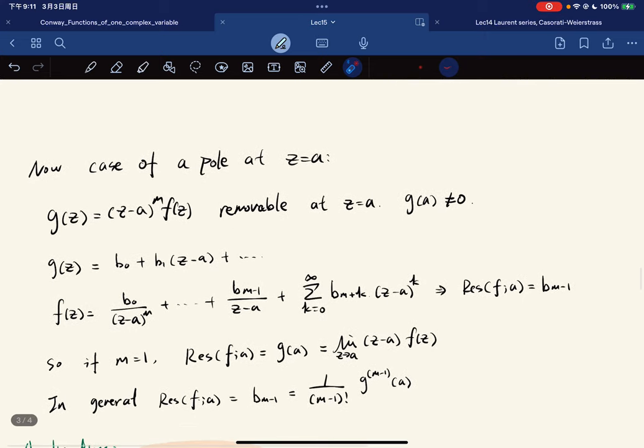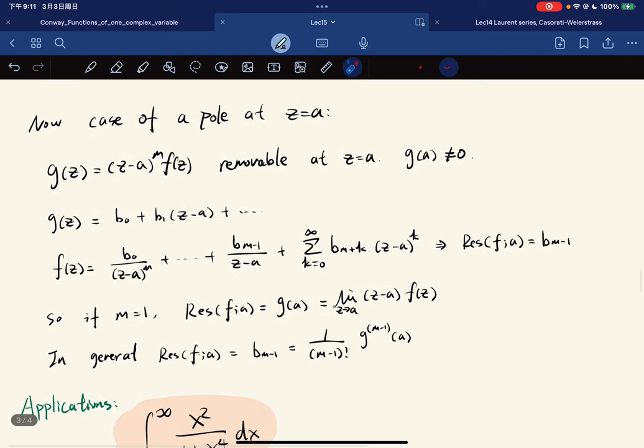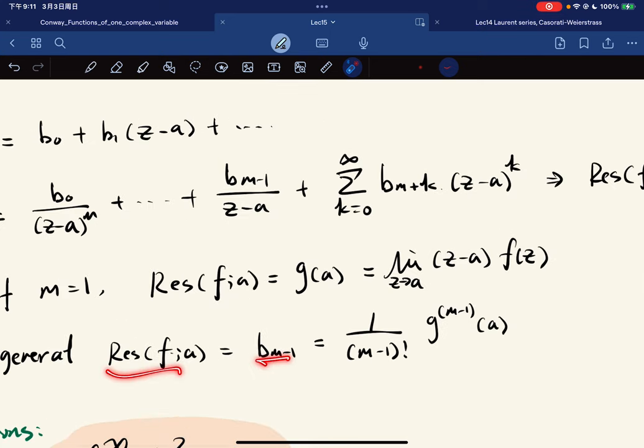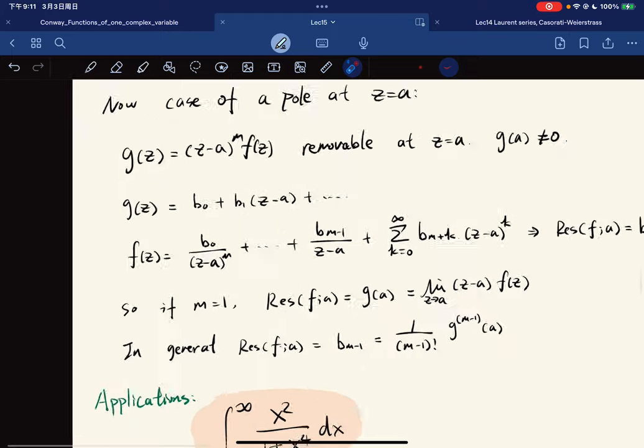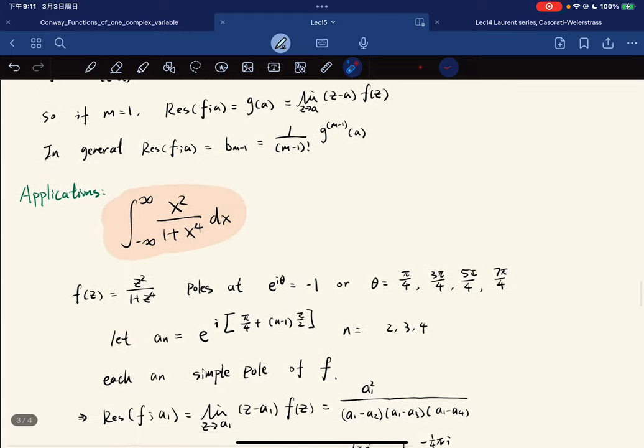Now which gives the formula. So the case of pole, let this be removable and g is not zero, so gz is equal to this, so fz is equal to this. The residue is equal to this one. So if m equals one, then it's equal to g(a), which is equal to this. But in general, the residue is equal to this. Okay, so this is by the power series formula.